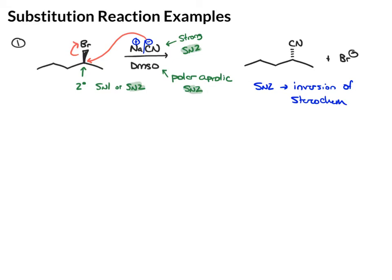In our second example, we have this organoiodide in the presence of methanol. Our iodide here is primary. That can only do an SN2 reaction. Our nucleophile is methanol. That's a weak nucleophile. Weak nucleophiles can only do SN1 reactions.